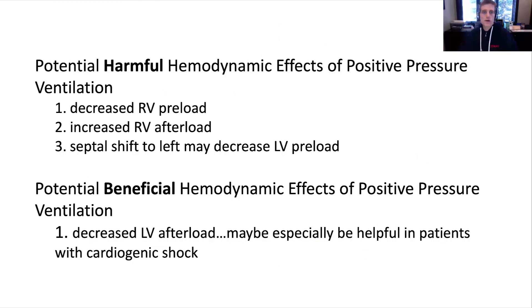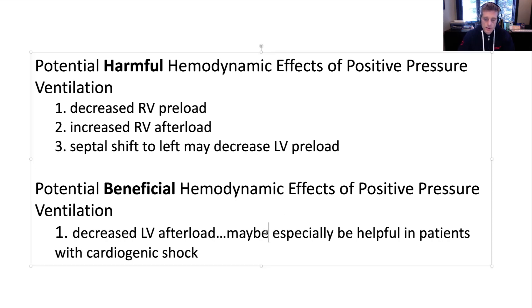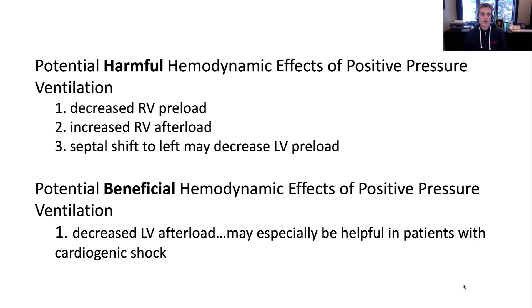To summarize: the potential harmful hemodynamic effects of positive pressure ventilation are decreased RV preload, increased RV afterload, and that septal shift to the left that may decrease LV preload. The potential beneficial hemodynamic effect is decreased LV afterload — the left ventricular wall has to work less hard to eject a given volume of blood — and this may be especially helpful in patients with cardiogenic shock.